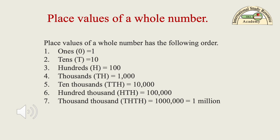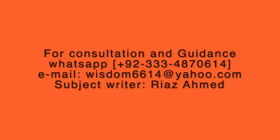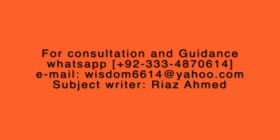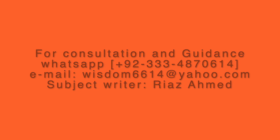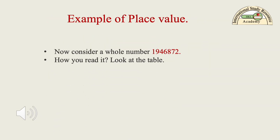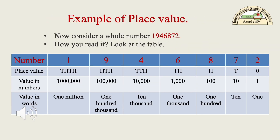7th place value is equal to 1,000,000 (millions), and 8th place value is equal to 10,000,000 (ten-millions). Now consider a whole number example: 1,000,946,872. How do you read it?